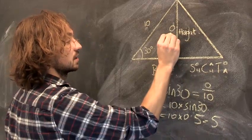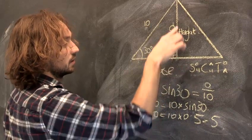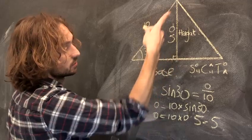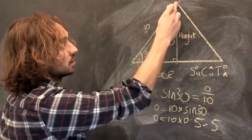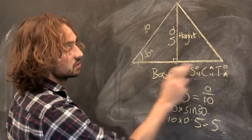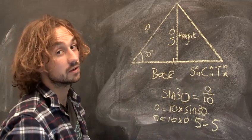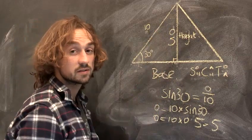So that means there, that length there is 5. That height of the triangle, using trigonometry, we know that length is 5. And you can use that height of the triangle and the base of the triangle to figure out the area of it. And that's how to find the height of a triangle.